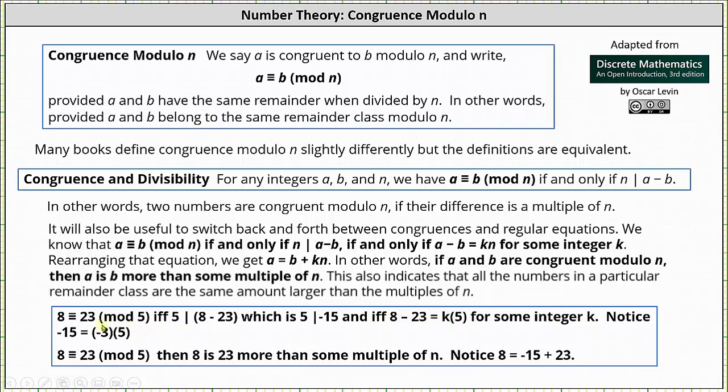We can also state if 8 is congruent to 23 mod 5, then 8 is 23 more than some multiple of n. Notice 8 is equal to negative 15 plus 23, where negative 15 is a multiple of 5.